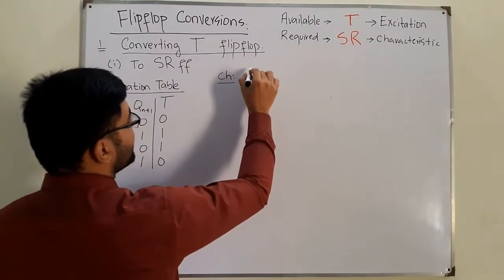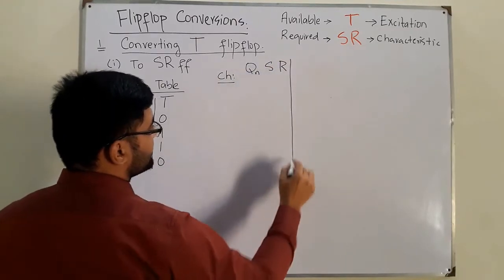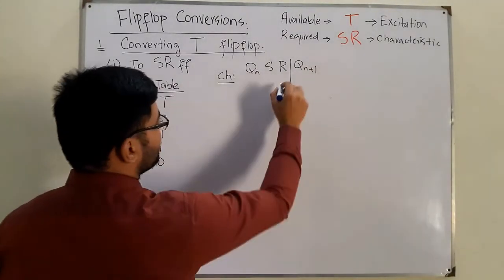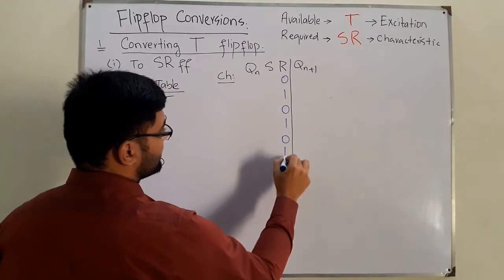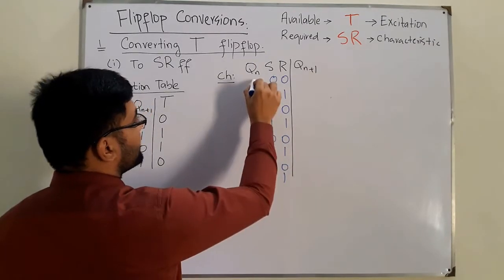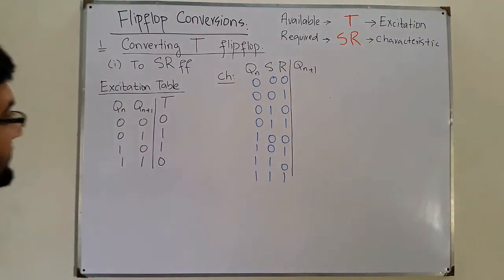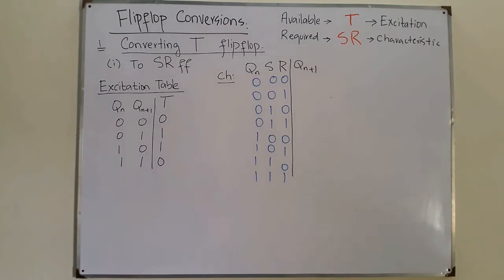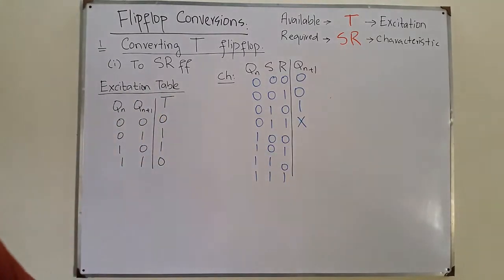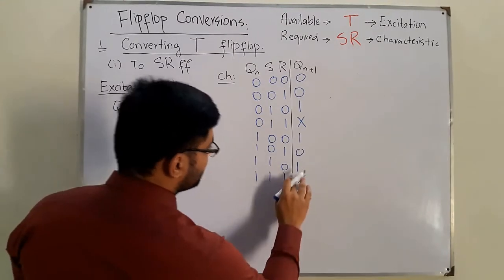Now you draw the characteristic table for the SR flip-flop. You have Qn, S, and R as inputs and the output is Qn+1. The characteristic table output Qn+1 values are: 0, 0, 1, don't care, 0, 0, 1, don't care, 1, 0, 1, don't care, 1, 0, 1, don't care.